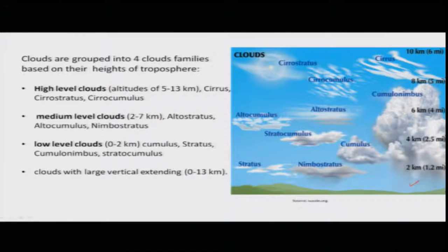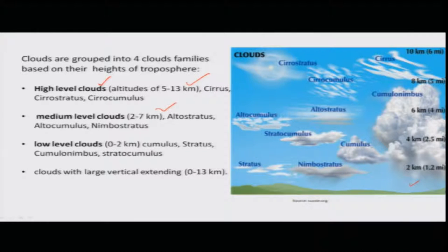High level clouds occur between 5 kilometers to 10 kilometers above the earth's surface. Medium level clouds are at 2 to 7 kilometers height. Low level clouds are at 0 to 2 kilometers in height.